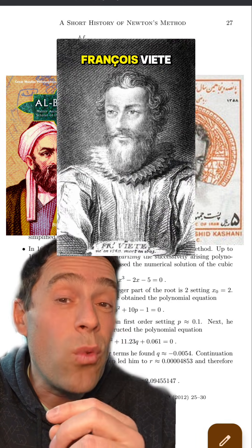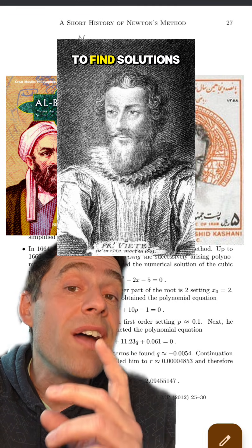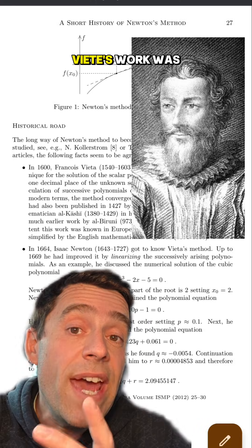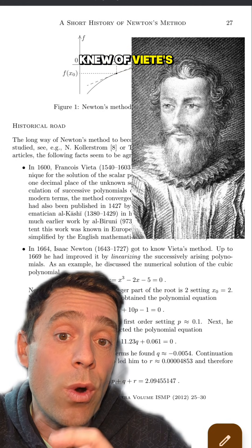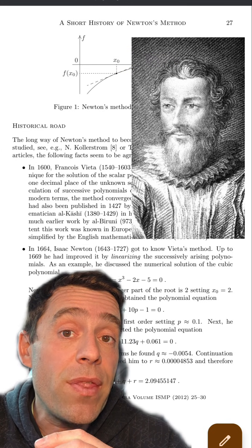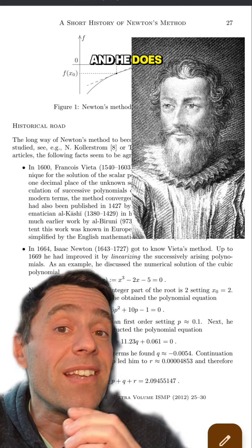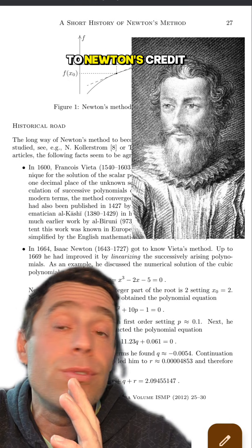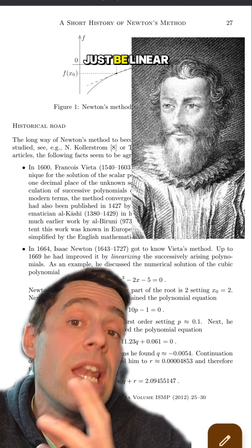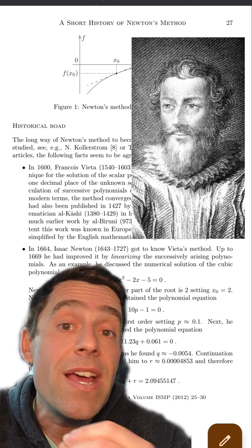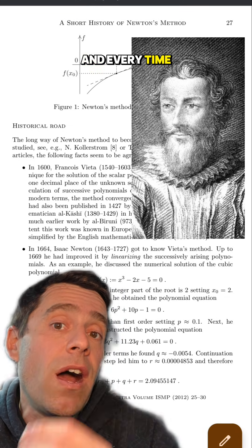Later on, we see that François Viète applies a very similar method of perturbations to find solutions of polynomial equations. Viète's work was very influential at the time, and Newton of course knew of it. Newton learns of Viète's method around the year 1664 and makes some small modifications — specifically, he makes the perturbations linear perturbations.